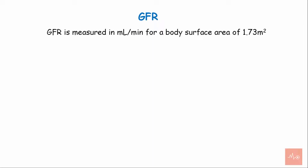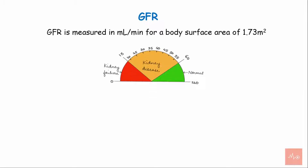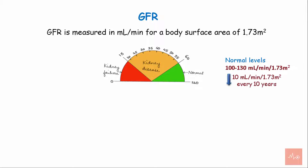GFR is measured in ml per minute for a body surface area of 1.73 m². The GFR level in a healthy young adult is 100 to 130 ml per minute per 1.73 m², and it is found to decrease with age by 10 ml per minute every 10 years.